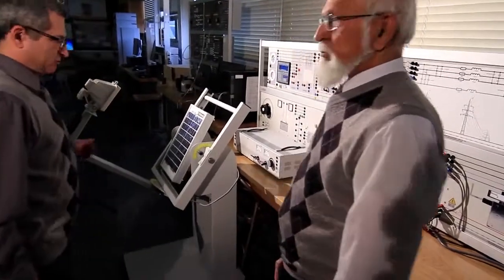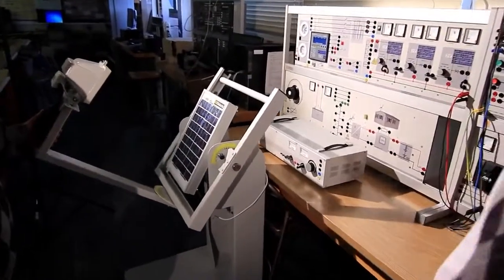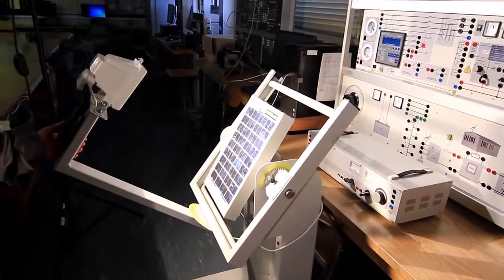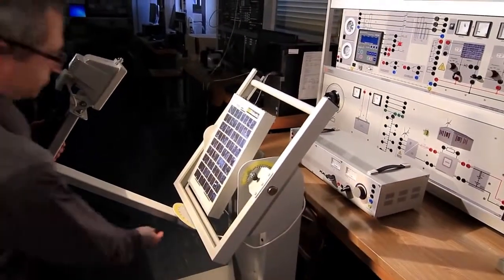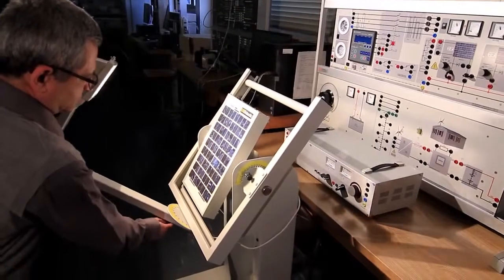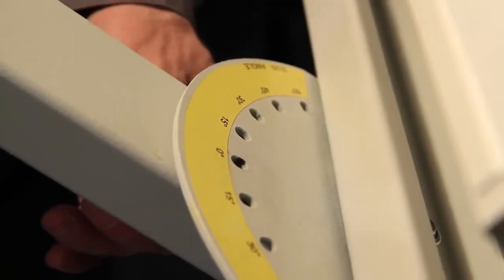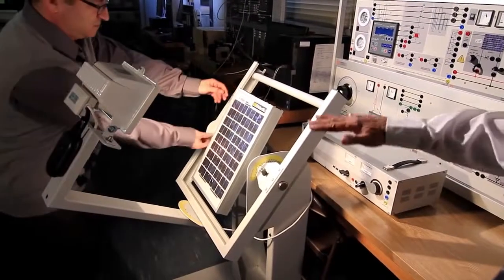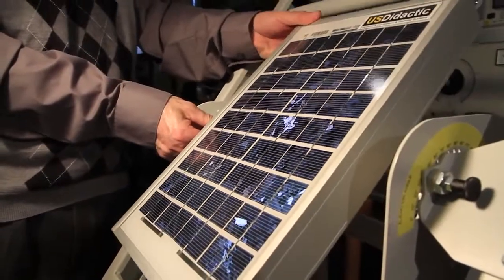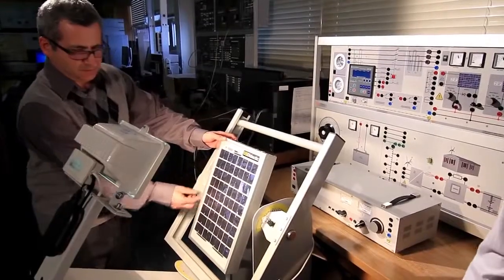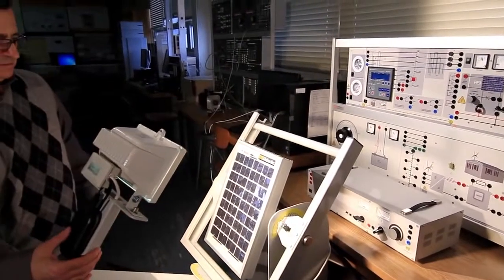As you can see here is a solar panel. We can adjust the light for the solar panel. We can adjust the direction of the sun from sunrise to sunset. And you can adjust the elevation, the elevation from winter to summer seasons. So students can adjust whatever condition they are trying to experiment with.